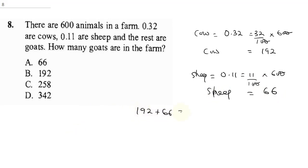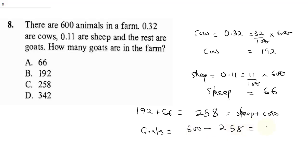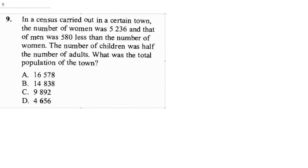Adding cows and sheep: 192 plus 66 equals 258. To find the goats, we do 600 minus 258, which gives us 342. So the correct answer is D.